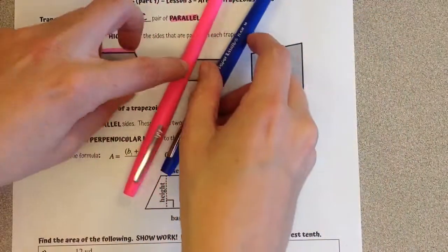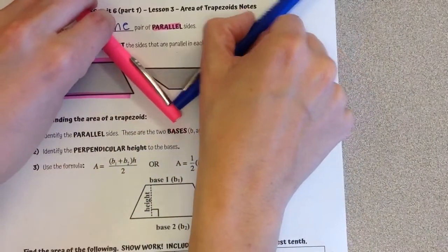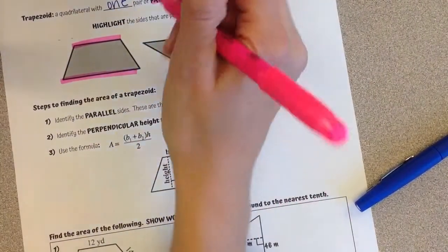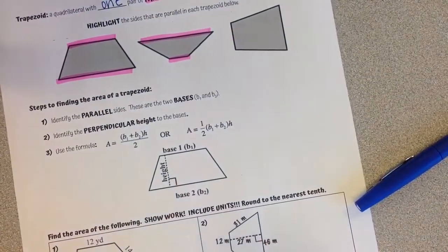If I look at this one, these two would never intersect, these two if I connected them they would. So the set of parallel sides here are the ones on the top and the bottom.